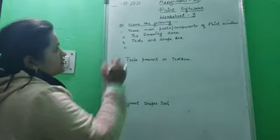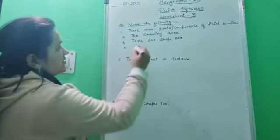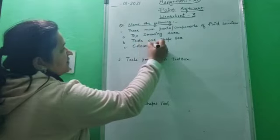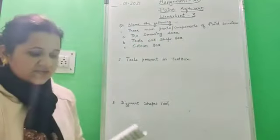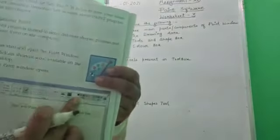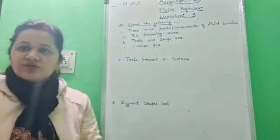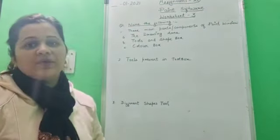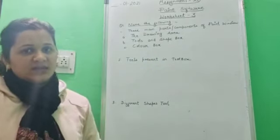Now, what is the third part? Yes children, color box. This is the color box where various colors are given. You can select any of the colors you want and fill it inside the pictures you have drawn on the drawing area.